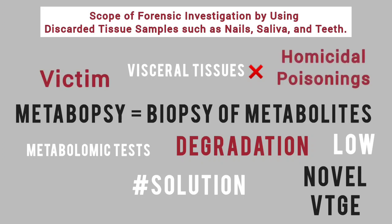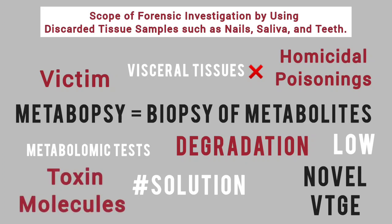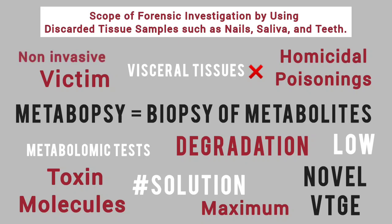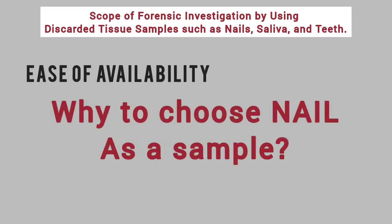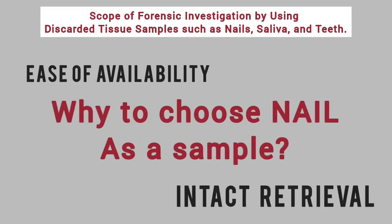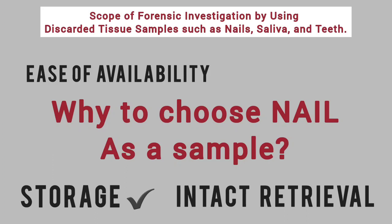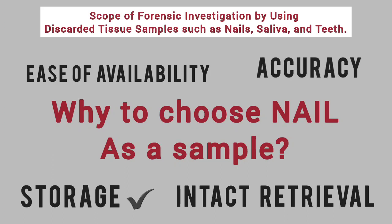Moreover, in cases of homicidal poisonings, the disposition of toxin molecules will be maximum in the victim's nail samples, which can be easily obtained through non-invasive biopsy methods. The ease of availability and intact nature of these tissues results in accurate analysis for finding the cause of death, which in turn lifts the forensic investigation to a fruitful conclusion.